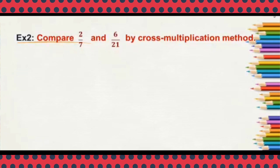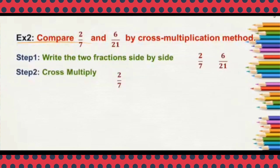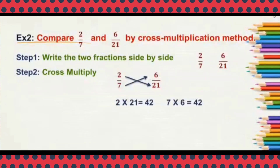Look at another example: compare 2 by 7 and 6 by 21 by cross multiplication method. We have to multiply 2 into 21 and 7 into 6. Write the two fractions side by side — 2 by 7 and 6 by 21 — then cross multiply. 2 into 21 is 42, and 7 into 6 is also 42.